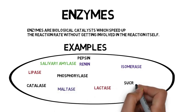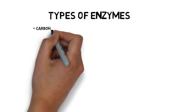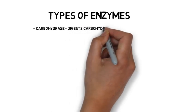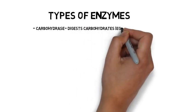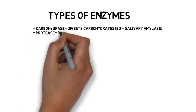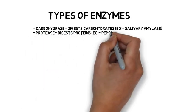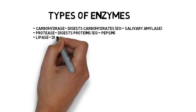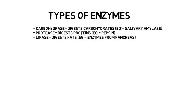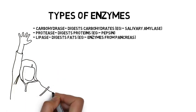Types of enzymes: carbohydrases digest the carbohydrates, e.g. salivary amylase. Proteases digest the proteins, e.g. pepsin. Lipase digests the fats, e.g. enzymes from the pancreas.